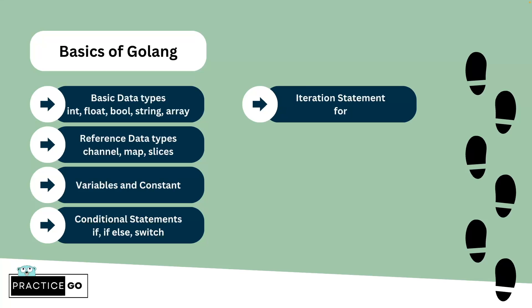You can iterate using two approaches: either use the traditional i equals zero to the length of the element, or use the special keyword range. The range keyword returns two things: first is the index and the other is the value, depending on the data type. For example, if you are iterating over an array, it returns the index and the value. But if it is a channel, it only returns the value.